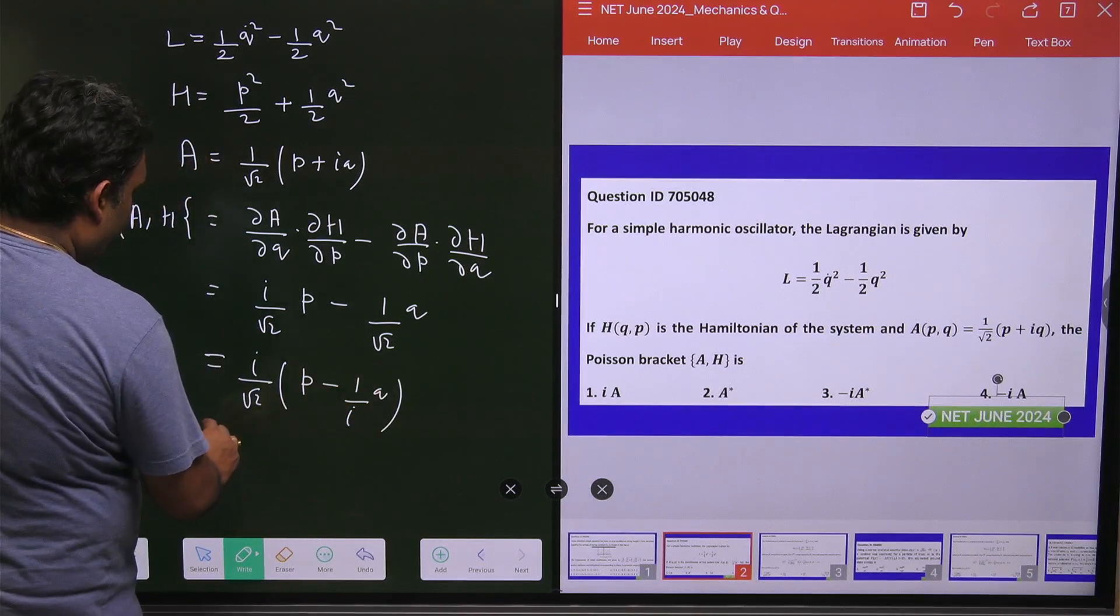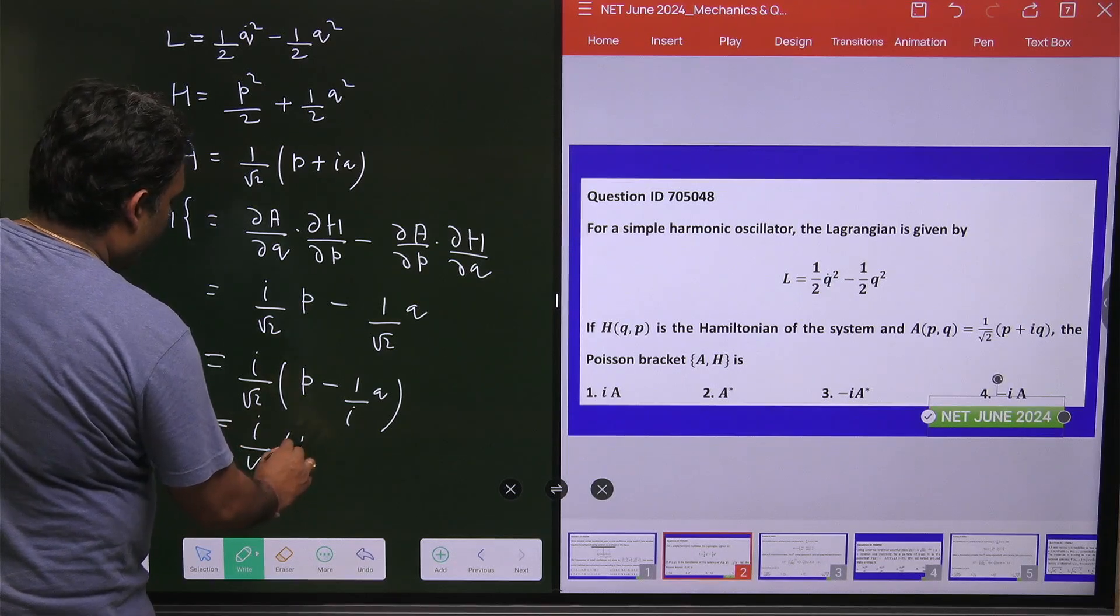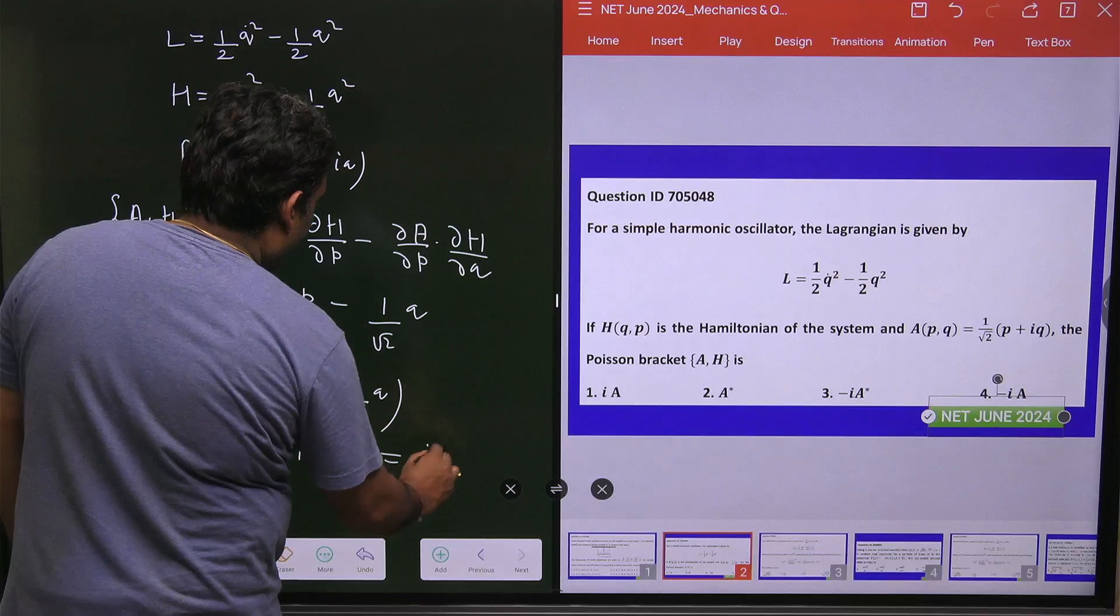When we go for this one, then we have i/√2 × (p + iq). And this value is nothing but i × A.